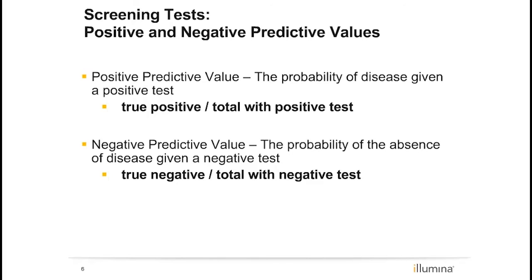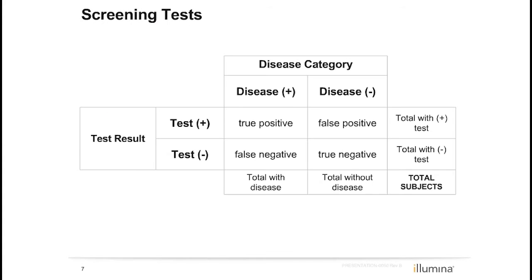PPV is the probability of a disease or condition given a positive test result — in other words, if a test is positive, what is the chance the patient is actually affected? NPV is the probability of the absence of a condition given a negative result. PPV and NPV are among the most important measures of a test and are important factors to discuss during both pretest and post-test counseling, as they help patients determine a more individualized risk assessment.